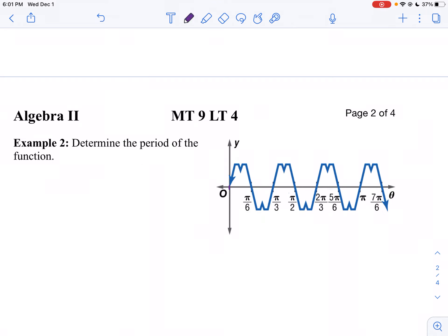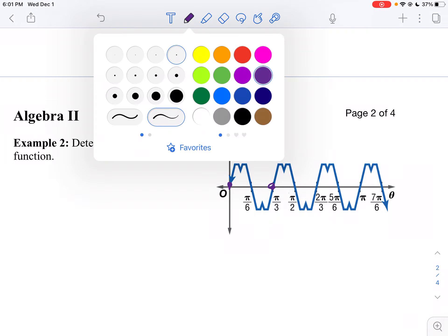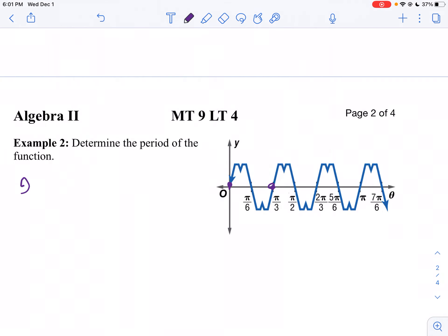So I'm going to look at the distance from 0 to π over 3. In other words, my period is going to be π over 3 minus 0. Now, I picked 0 because that's a nice one to work with, but I can pick any point.